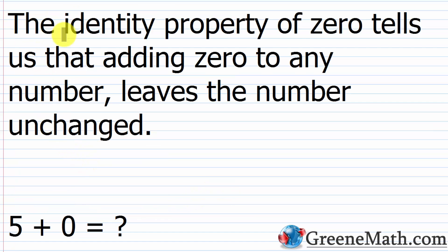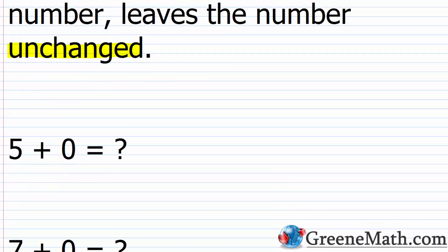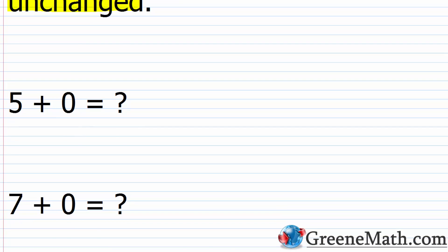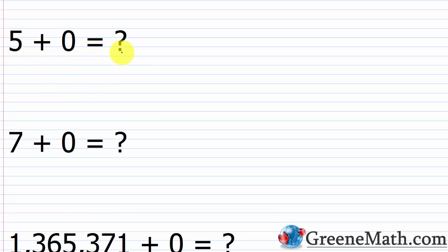The first property we're going to learn about is the identity property of zero. It tells us that adding zero to any number leaves the number unchanged. For example, five plus zero equals five — adding zero to five leaves five unchanged.